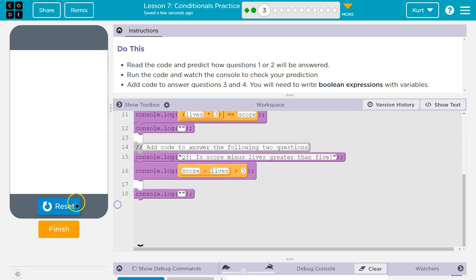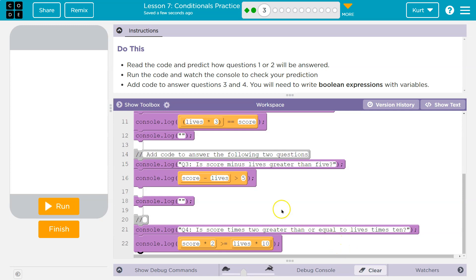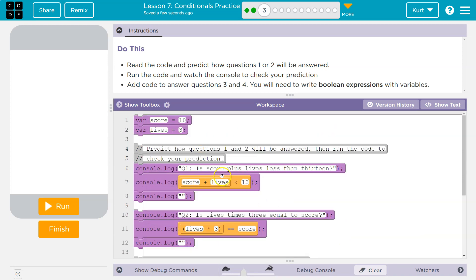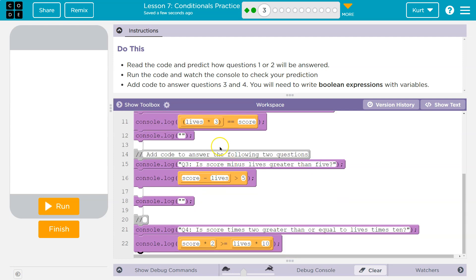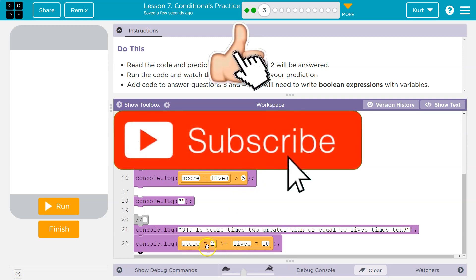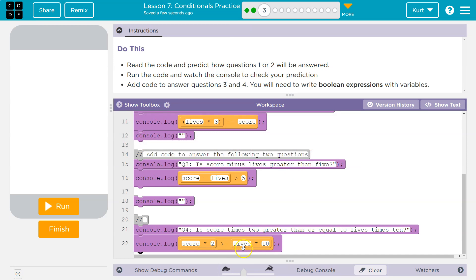These are tricky though, right? So we really do need to understand - score and lives, this is what they're equal to: 10 and 3. We're not changing them here, we're just using them. We would have like score is equal to 5 - that changes it. Here we're just using them. And that's why we can do score minus lives, which would be 10 minus 3, and that would equal 7. That's greater than 5. The answer is true. And the same holds here. Score times 2 is 20. Lives times 10 is 30. Is 20 greater than or equal to 30? No. So that one's false. Awesome. Let's keep going.